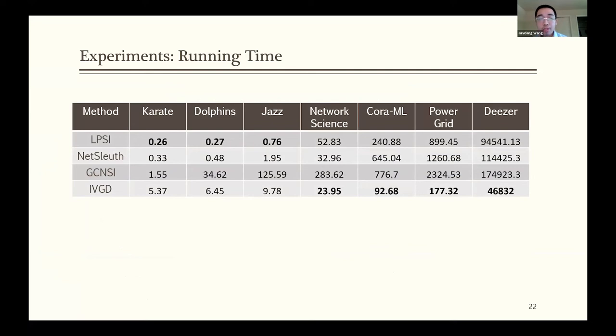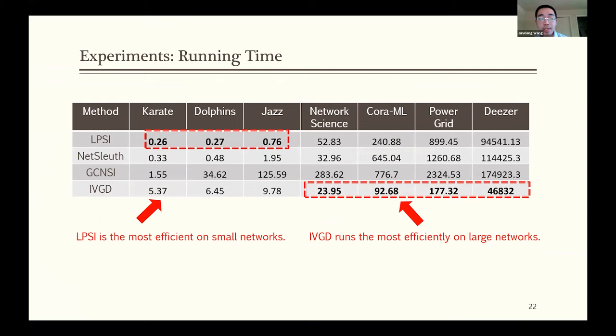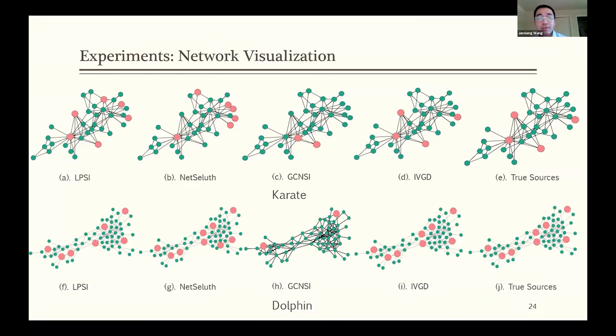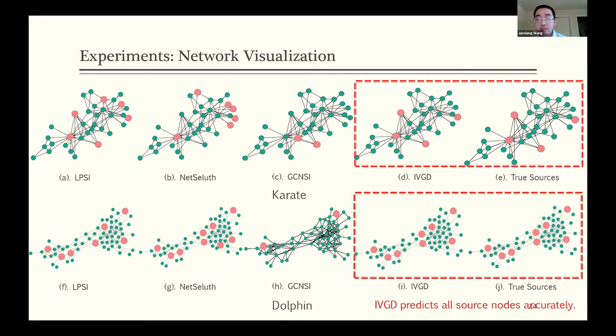We also demonstrated the running time for multiple datasets. You can see that for the first three datasets, LPSI is the most efficient one. But for the large scale networks or datasets, our proposed IVGD is the most efficient one. So in this case, our IVGD has very great scalability. Finally, we make some visualization of proposed IVGD in comparison with all baselines. You can see that on the two datasets shown here, our prediction is identical to the true sources. This means that we can have a perfect prediction on the source localization.